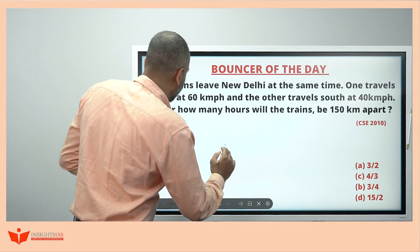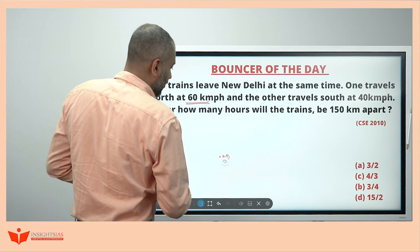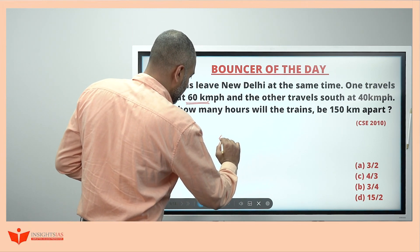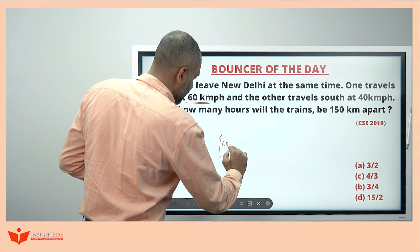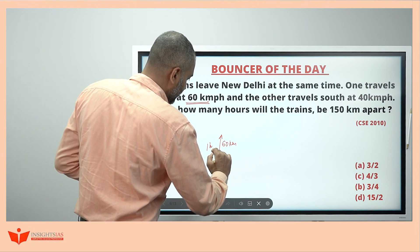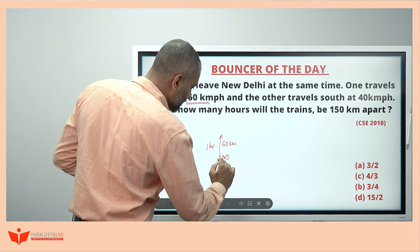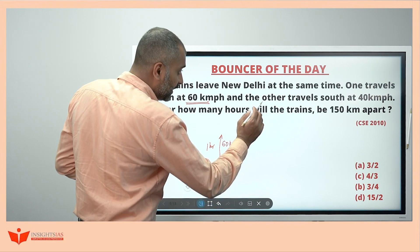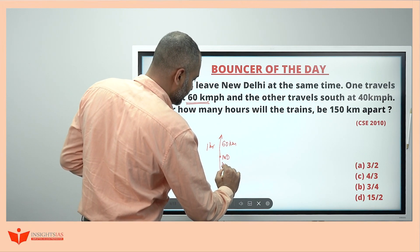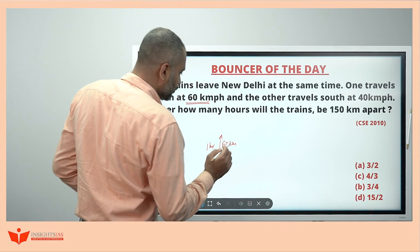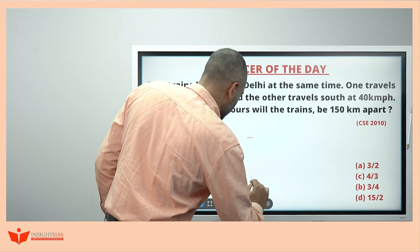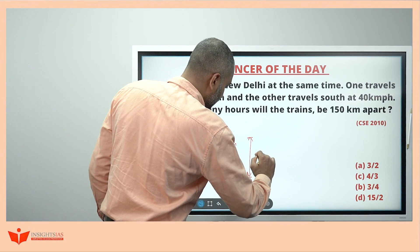A train is moving north and another train is moving south. A north moving train is moving at 60 kilometers per hour means after 1 hour, it has traveled 60 kilometers and the time is 1 hour. Simultaneously, another train is moving here. It can travel 40 kilometers in 1 hour. So, in 1 hour, this whole distance is nothing but 100 kilometers.